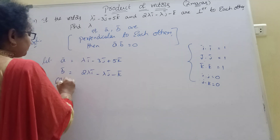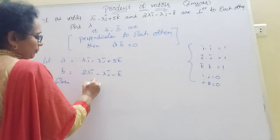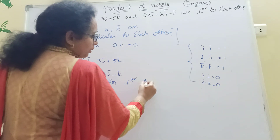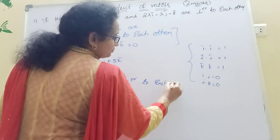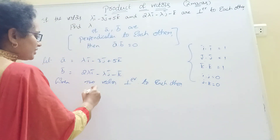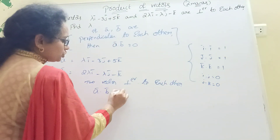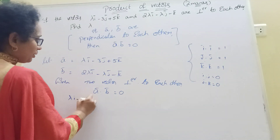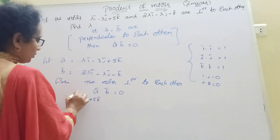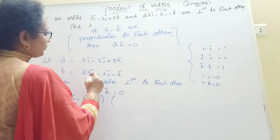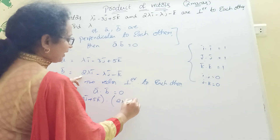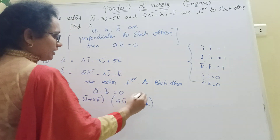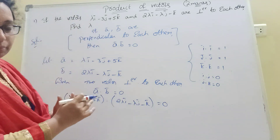Since the two vectors are perpendicular to each other, we apply the condition A bar dot B bar equal to 0. So we write: lambda i bar minus 3j bar plus 5k bar, dot, 2 lambda i bar minus lambda j bar minus k bar, equal to 0. This is the perpendicular condition.